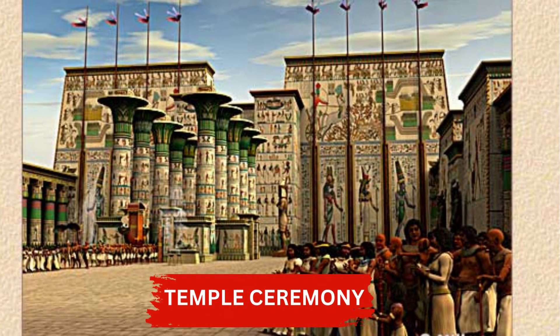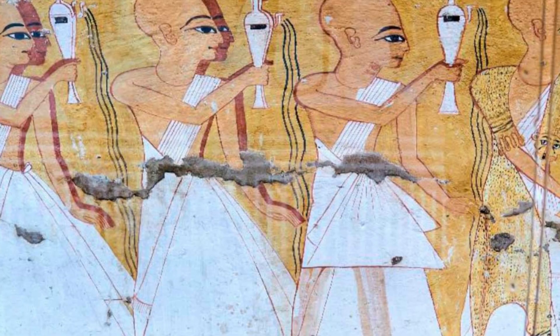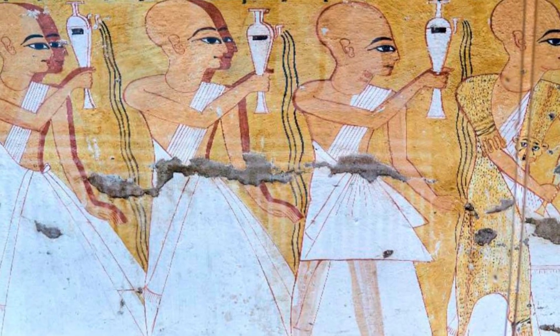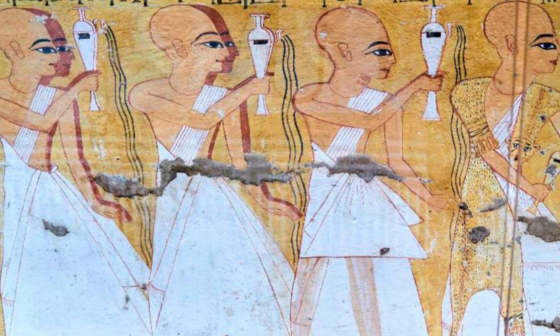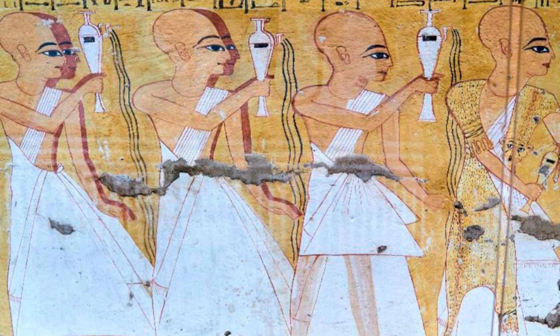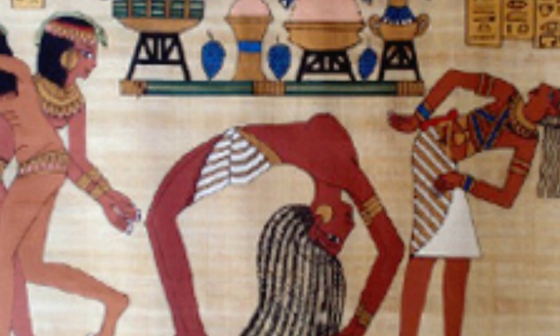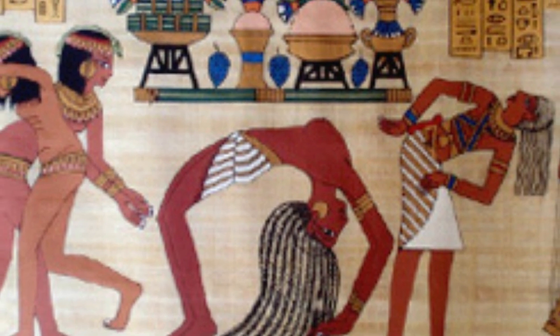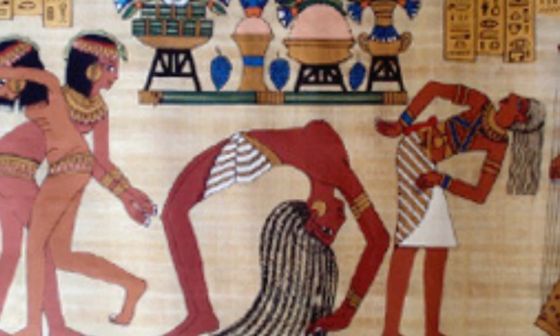Temple ceremonies were held in honor of the gods and goddesses and were typically performed by priests and priestesses. These ceremonies included purification rituals, offerings of food and drink, and the recitation of prayers and hymns. The temple ceremonies were important in maintaining the relationships between the gods and the people and were often accompanied by music and dance.